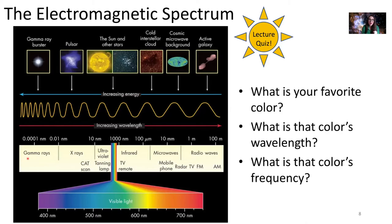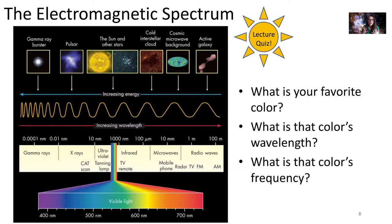Each photon — that individual packet of light — carries the energy associated with its wavelength. Stars like our sun emit light in the visible but also in ultraviolet and infrared. Things that are colder, like interstellar material between galaxies, have longer wavelengths, less energy, and cooler temperatures. Objects emitting shorter-wavelength light with more energy tend to be associated with the most volatile processes in the universe.